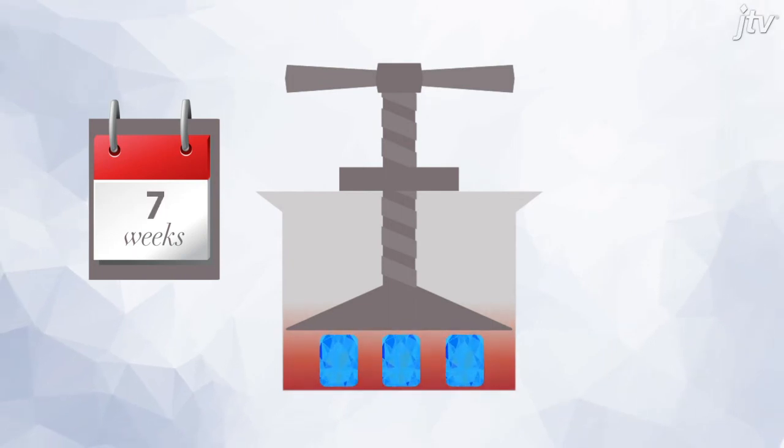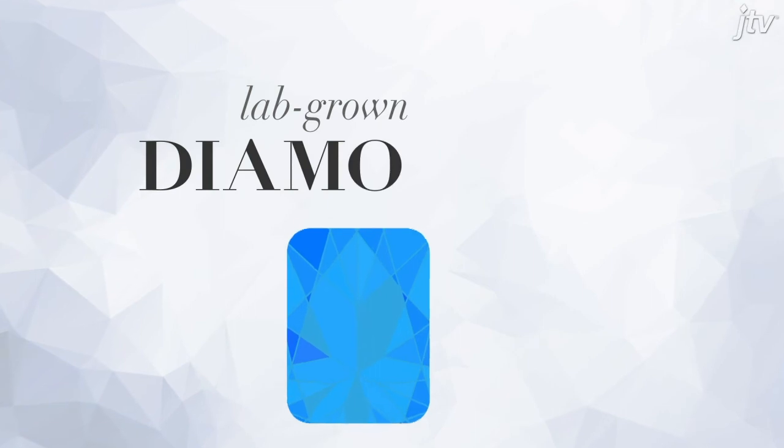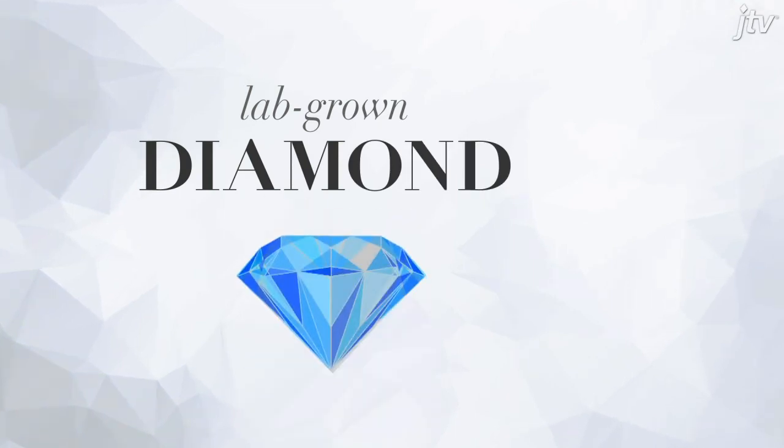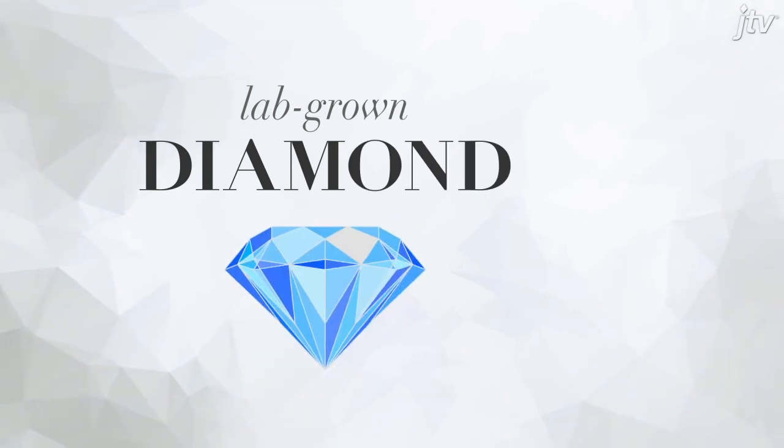After approximately 12 weeks, just like the CVD process, a diamond rough emerges. The newly formed diamond rough is now ready to be cut and polished into an actual lab-grown diamond beauty.